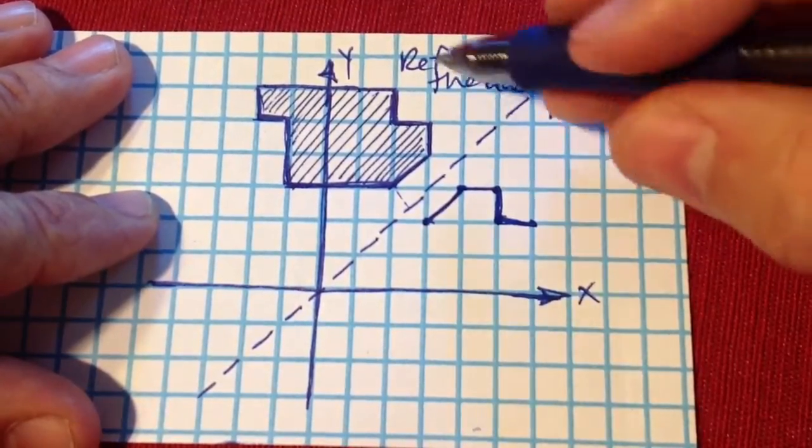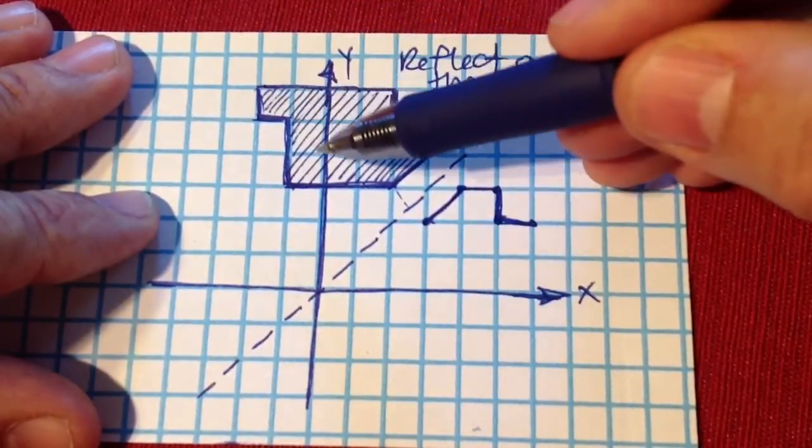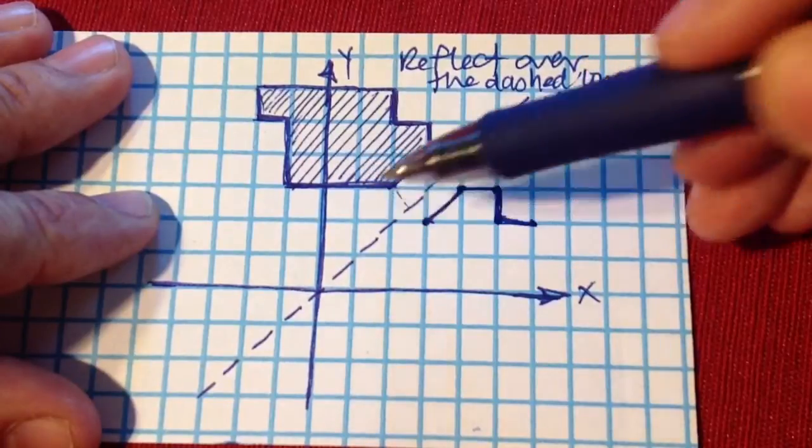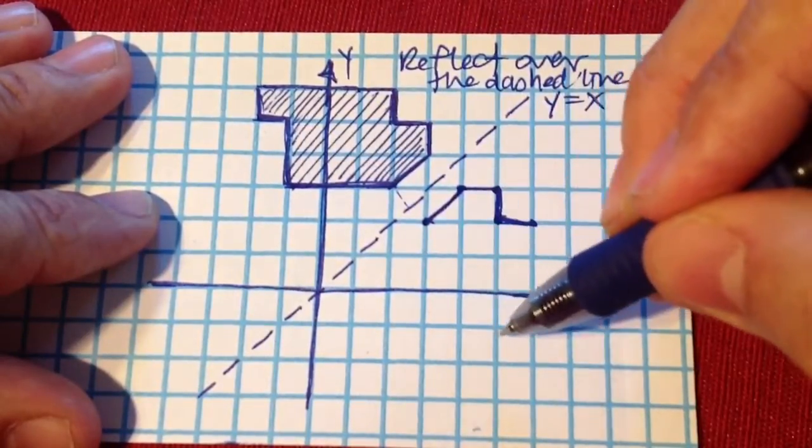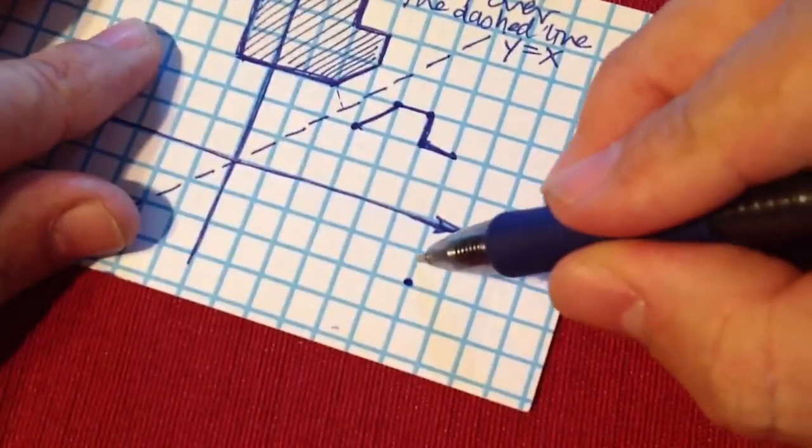Next one that we should probably plot is this one over here. This is kind of far away, so we're going to have one, two, three, four [counting diagonal distances on each side], this should be connected like this.